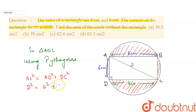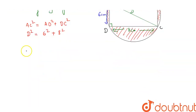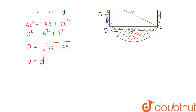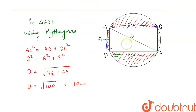Putting in the values: D² = 6² + 8², so D will be equal to √(36 + 64) = √100 = 10. So the diameter of this circle is 10 cm.